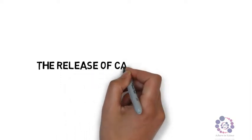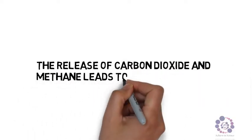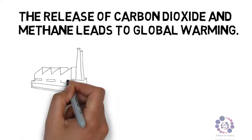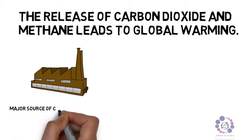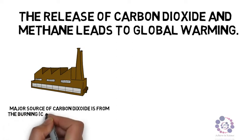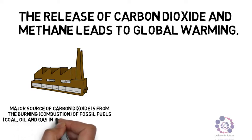This means that if we change the amount of carbon dioxide and methane, it can lead to global warming. So the release of carbon dioxide and methane needs to be monitored. A major source of carbon dioxide is from the burning, combustion of fossil fuels. This includes coal, oil and gas in factories, cars, and planes for instance.